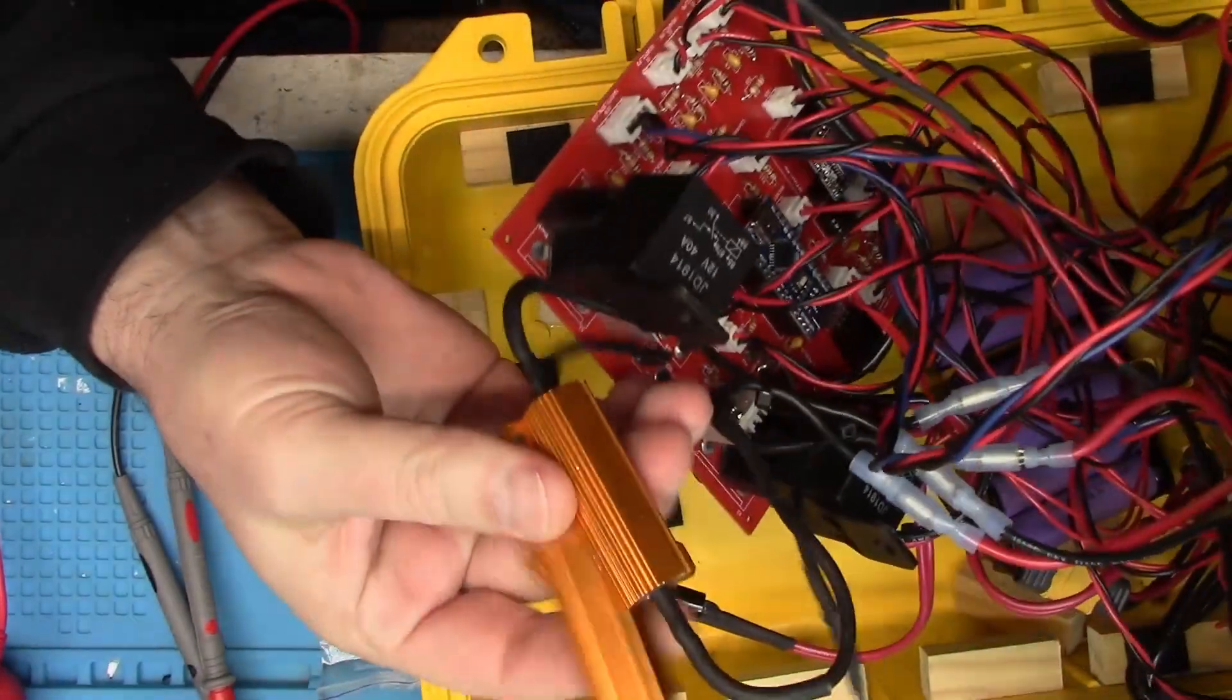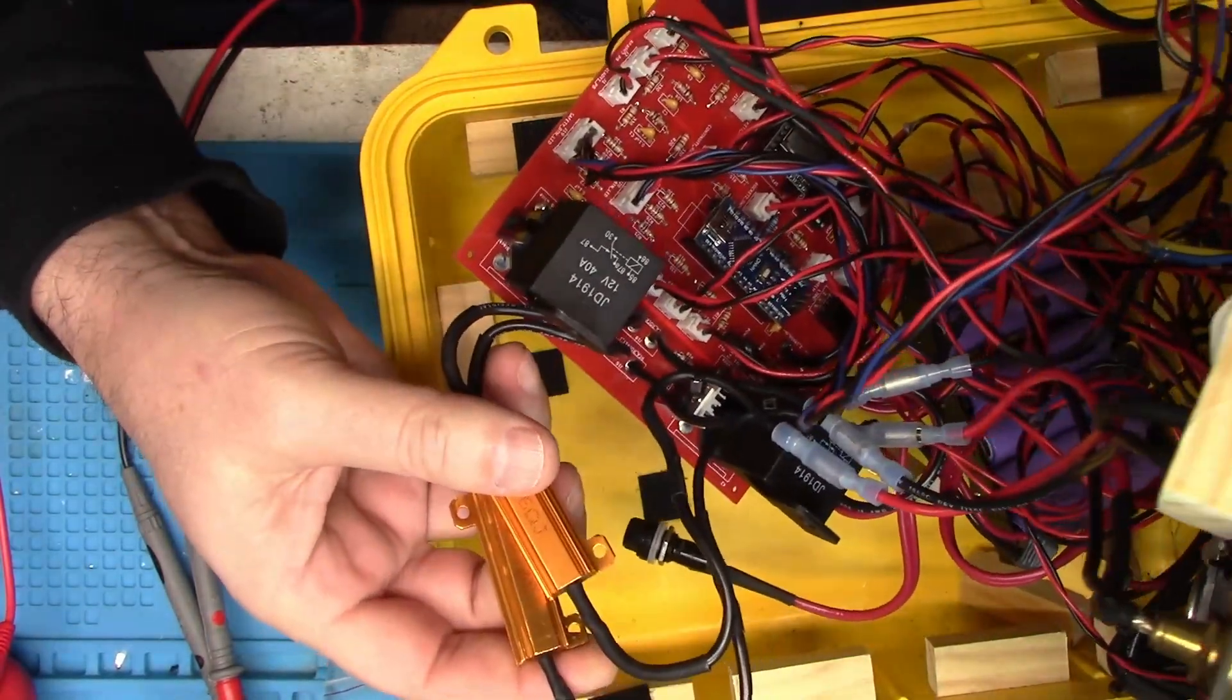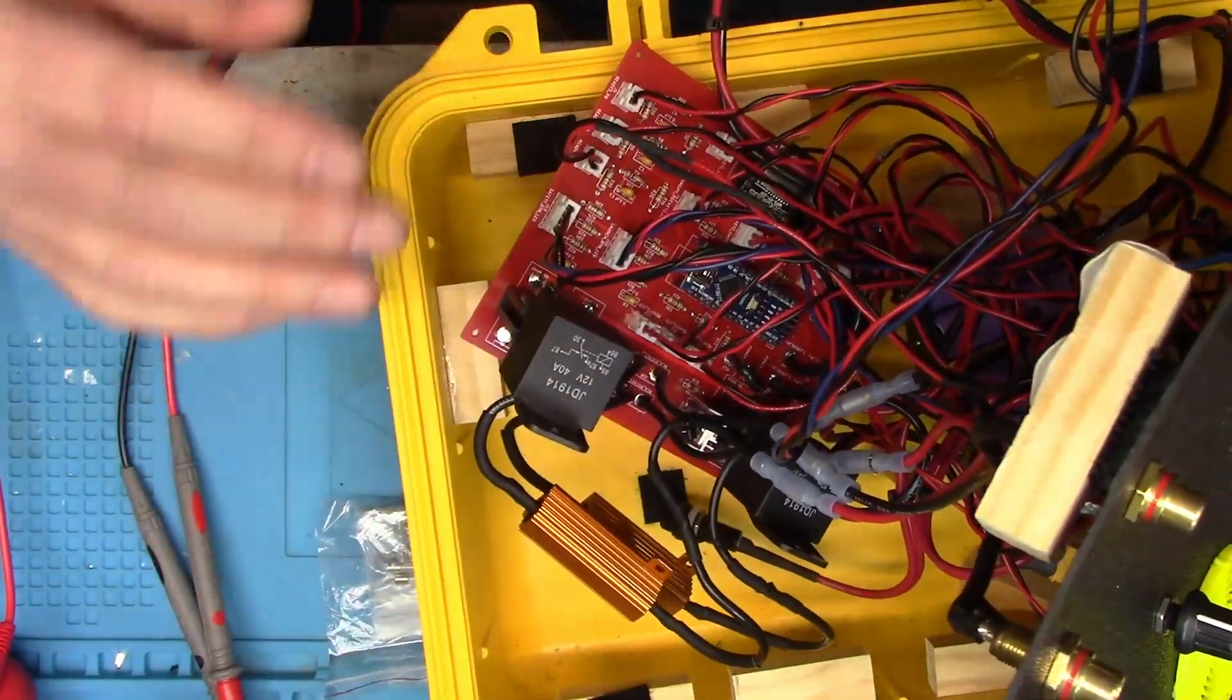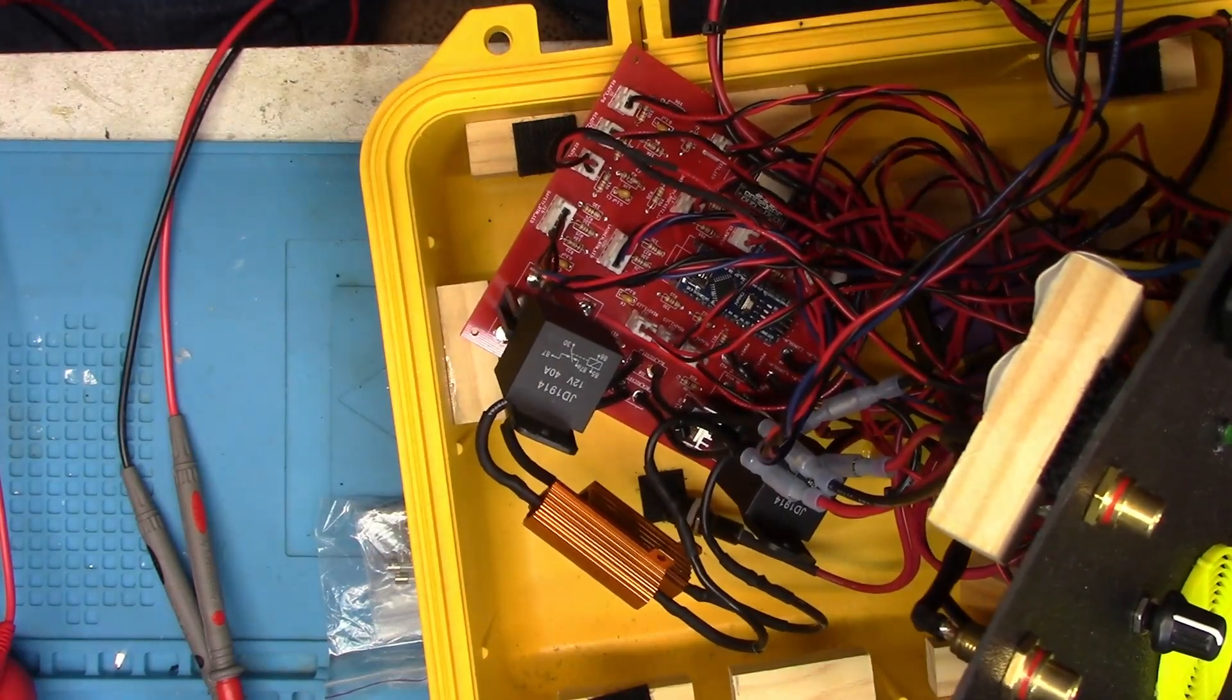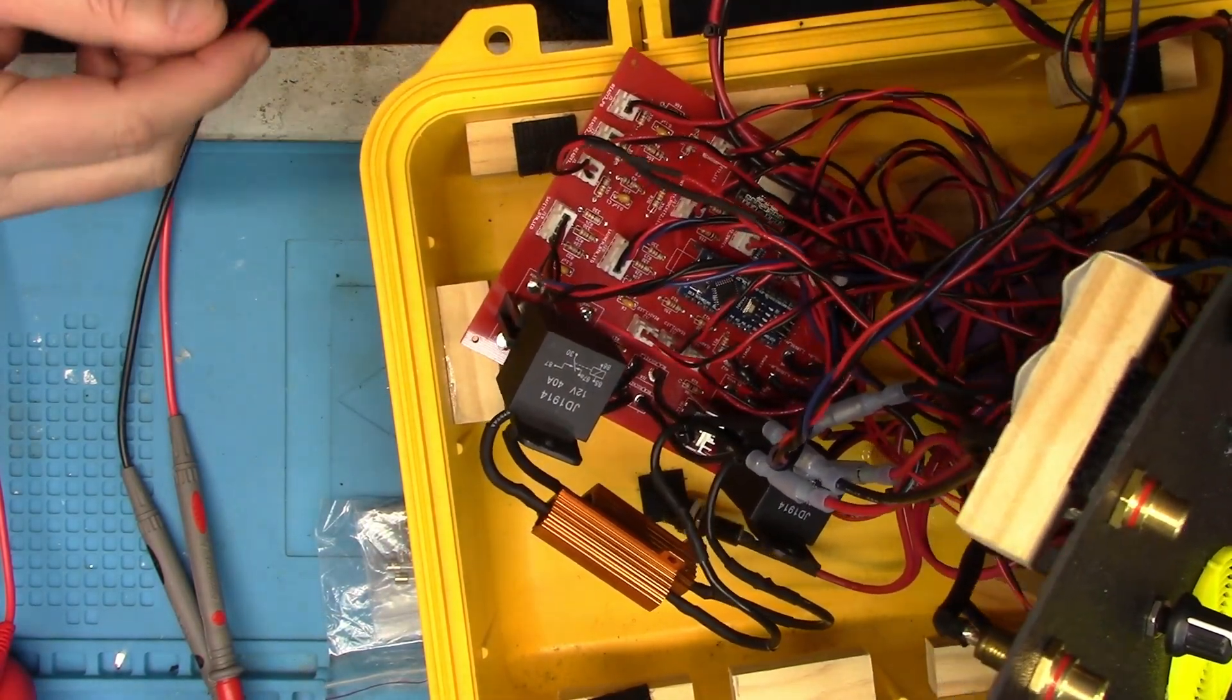So, these are the two 6-ohm 50-watt resistors. What we're going to do first is just do a quick test. We're going to see how many amps we do get out of it when we fire it.